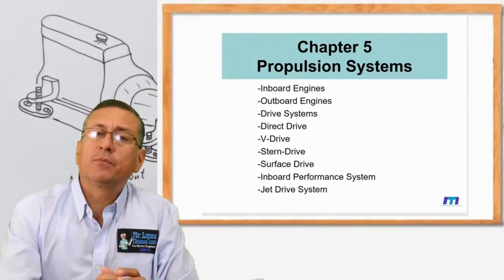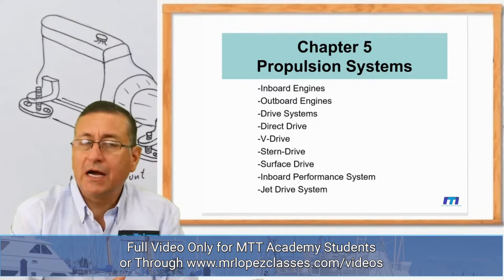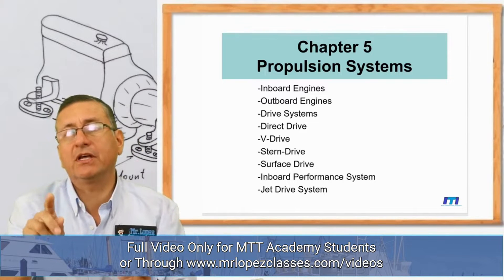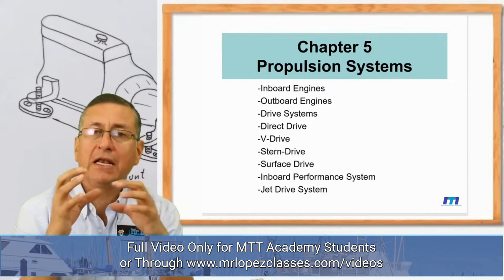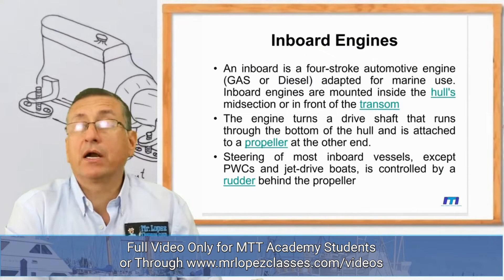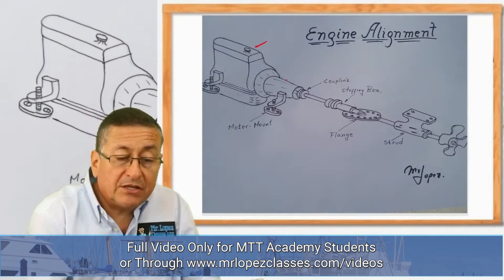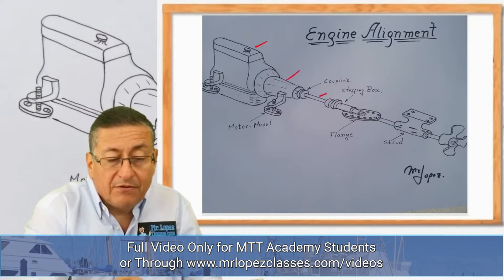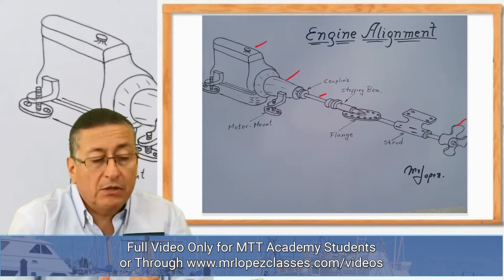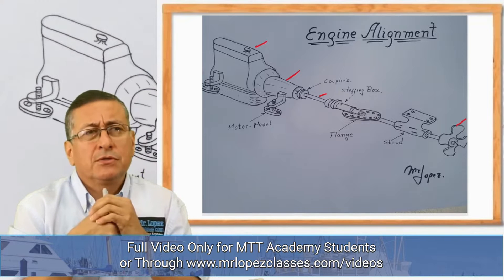We are going to analyze the different types of propulsion systems, what is more efficient, and why certain systems are preferred. The gasoline inboard marine engine is essentially an automotive engine — this is the transmission, this is the shaft, and this is the propeller. This is the typical setup we have in this particular engine.